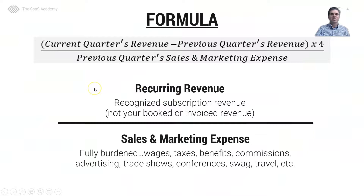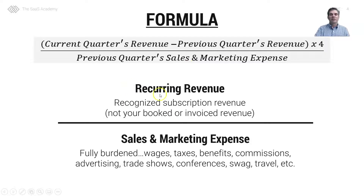So how do we calculate the SAS magic number? In the numerator, we take our current quarter's revenue minus our previous quarter's revenue and times 4 to annualize. And we divide that by our previous quarter's sales and marketing expense. In the numerator, we are going to use recurring revenue — this is our recognized subscription revenue, not your booked or invoiced revenue.